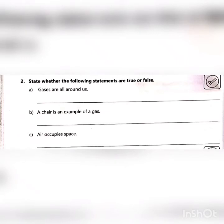Now, question number 2: State whether the following statements are true or false. A. Gases are all around us — is it true or false? Yes, it is true. B. A chair is an example of gas — is it true or false? No, it is false. C. Air occupies space — is it true or false? Yes, it is true. Air is a gas in which living things live and breathe, so the answer is true.